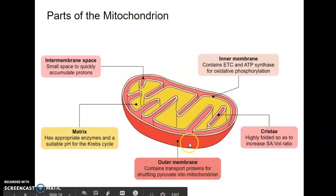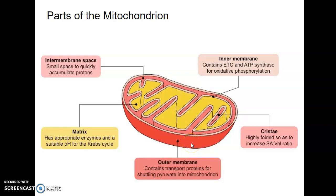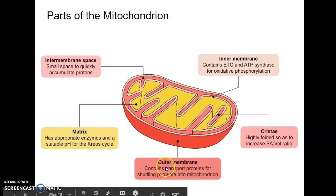Starting with the outer membrane, which is colored in red on the outermost part of the organelle. The outer membrane contains a lot of transport proteins and is semi-permeable. Most of the transport proteins in the outer membrane are porin transport proteins, which form very aqueous channels through the bilayer — analogous to aquaporins. The outer membrane is semi-permeable, and it contains transport proteins specifically for shuttling pyruvate into the mitochondrion.